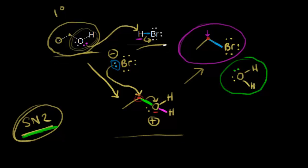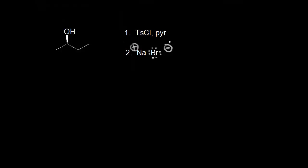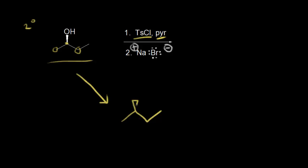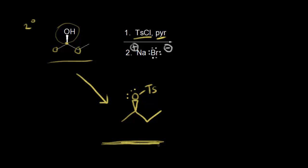Let's look at another SN2 reaction, this time with a secondary alcohol. The carbon bonded to OH is bonded to two other carbons. We saw in an earlier video that alcohols react with tosyl chloride and pyridine to form a tosylate. In step one, we form the tosylate and retain the stereochemistry — we had a wedge before and we still have a wedge, with an OTs group. This gives us a much better leaving group, which is one of the reasons for using tosylates.